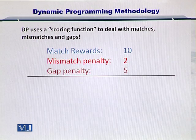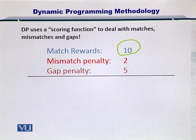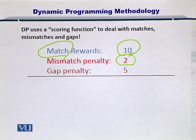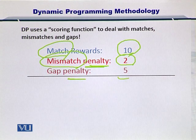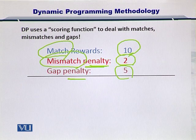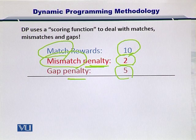Let's take an example. I have constructed it with plus 10 for a match, minus 2 for a mismatch — so it's a penalty — and a gap penalty of minus 5. So every match is scored with plus 10, every mismatch with minus 2, and every gap with minus 5.